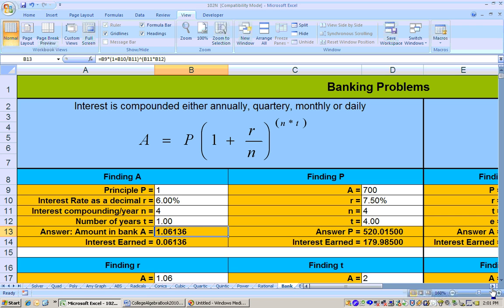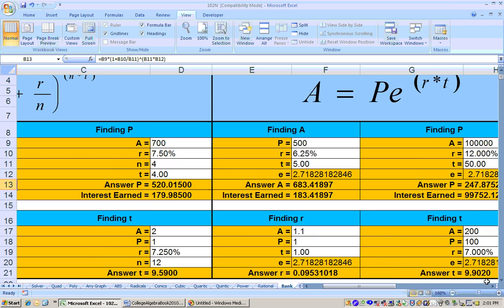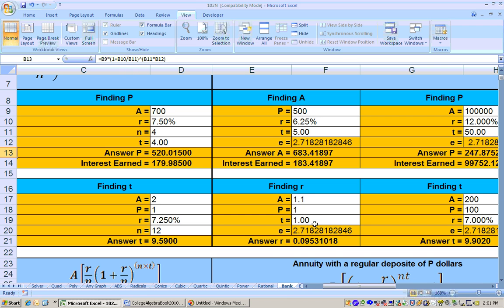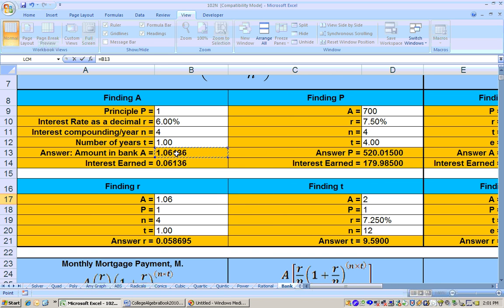Now, what continuous interest rate would I need to receive to give me this value right here? Well, I'm finding a continuous interest rate, so I would be right here in this area. Now right here, I'm going to want to type equals and then click on this cell right here.